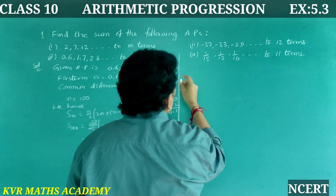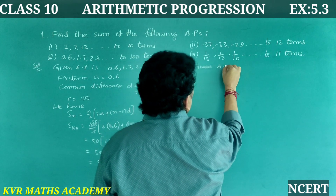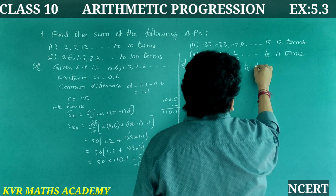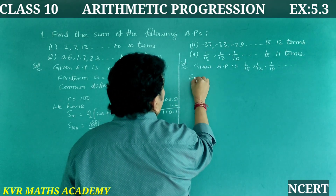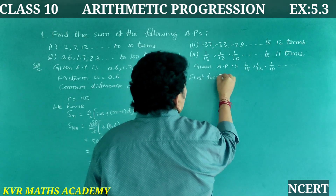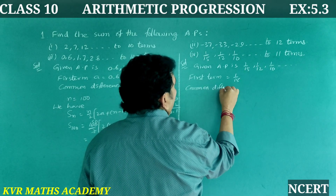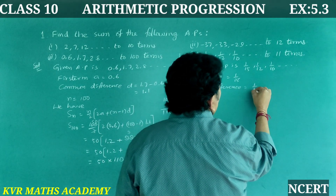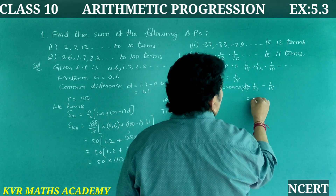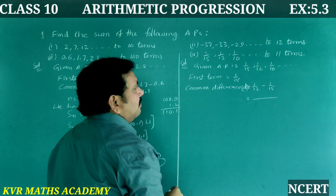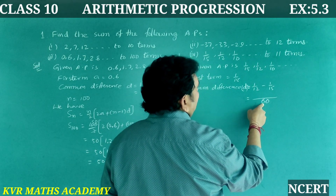In the same way, fourth AP: 1/15, 1/12, 1/10, and so on for 11 terms. First term a = 1/15. Common difference d = 1/12 − 1/15. LCM of 12 and 15 is 60. So d = 5/60 − 4/60 = 1/60. n = 11.